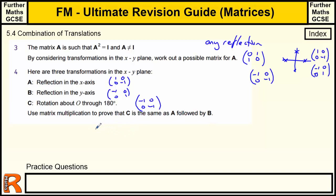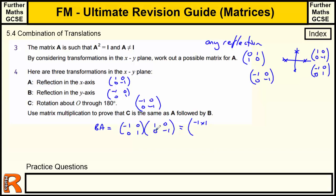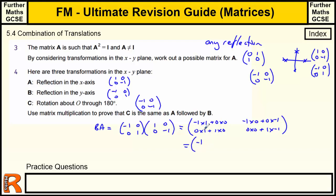A followed by B is matrix product BA, which equals [[−1,0],[0,1]] times [[1,0],[0,−1]]. Computing: (−1×1)+(0×0)=−1, (−1×0)+(0×−1)=0, (0×1)+(1×0)=0, (0×0)+(1×−1)=−1. This gives [[−1,0],[0,−1]], which equals C. This proves that the composite transformation A followed by B is the same as the 180-degree rotation C.